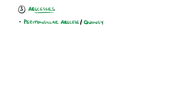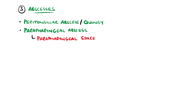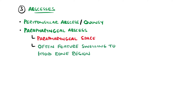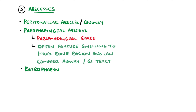A parapharyngeal abscess is an abscess in the parapharyngeal space that has an anterior and posterior compartment, the latter housing the carotid artery and internal jugular vein. In addition to other sore throat symptoms, these often feature swelling in the neck down to the hyoid bone and compression of the upper airway and gastrointestinal tract as it progresses.